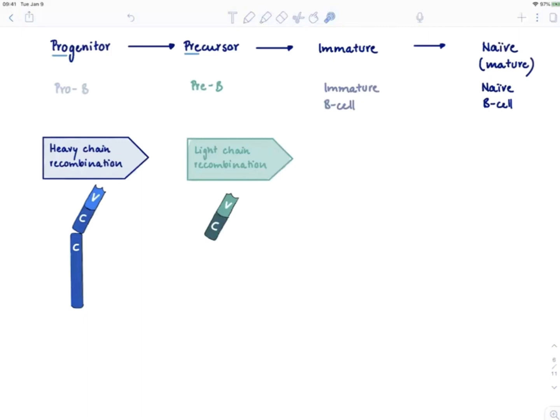How do we get this huge diversity in the variable region of the heavy chain? This is facilitated by VDJ rearrangement, where we just join different DNA segments randomly together.